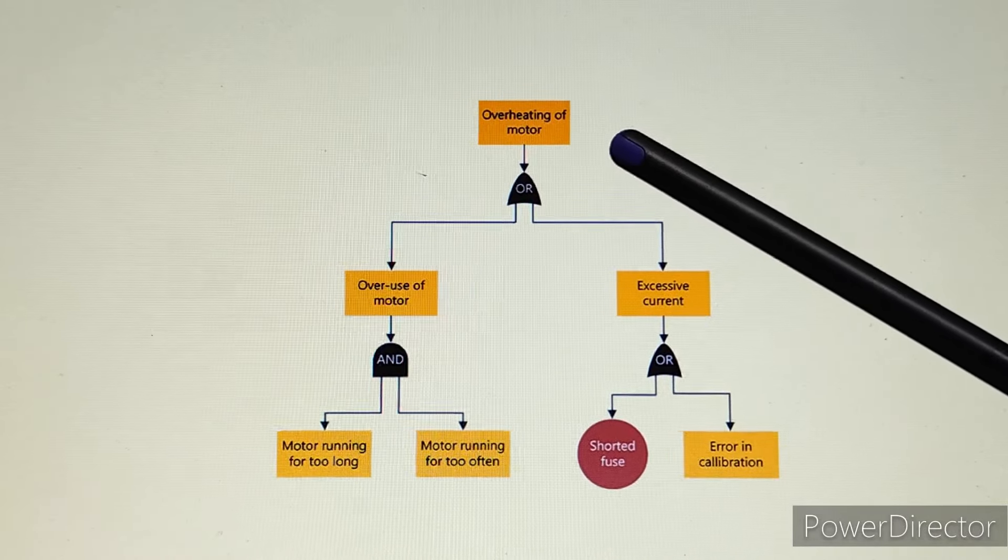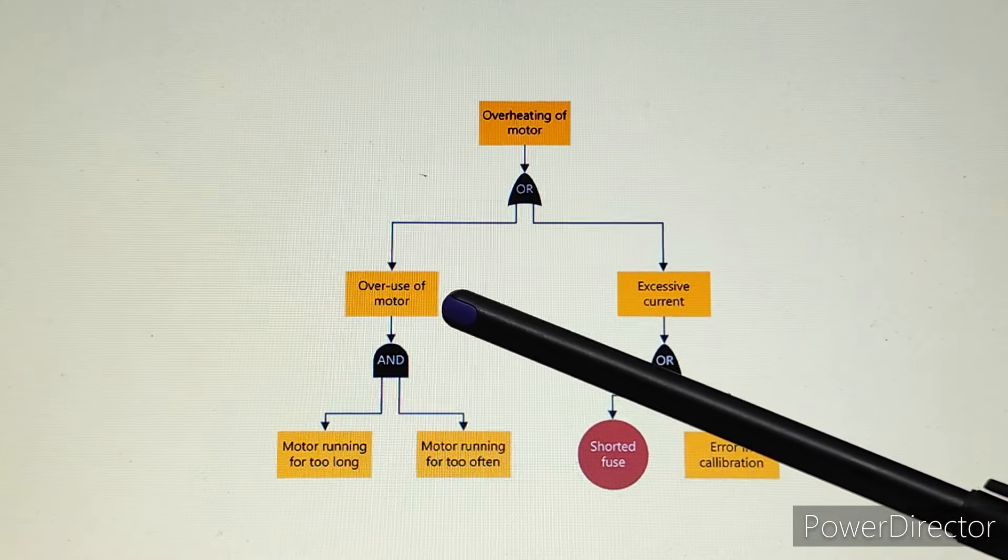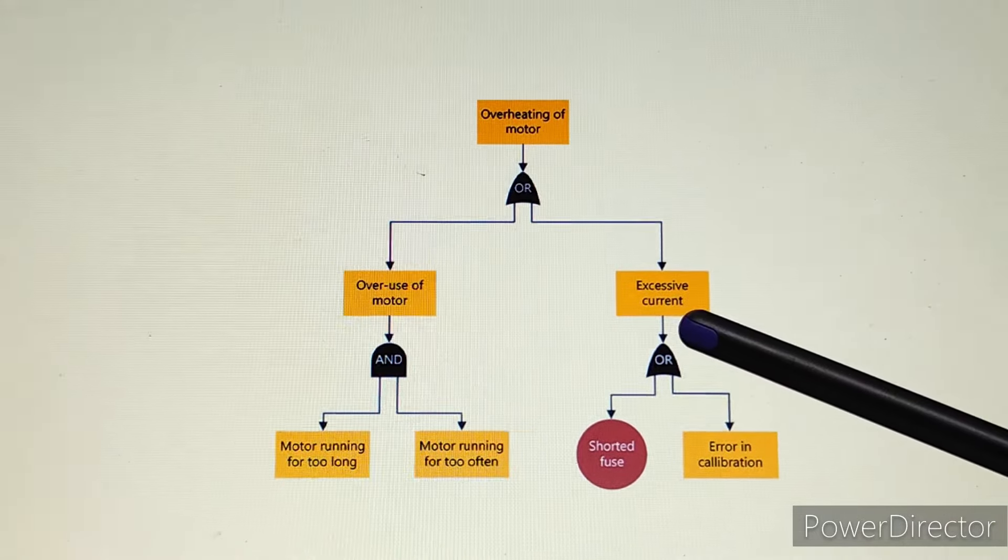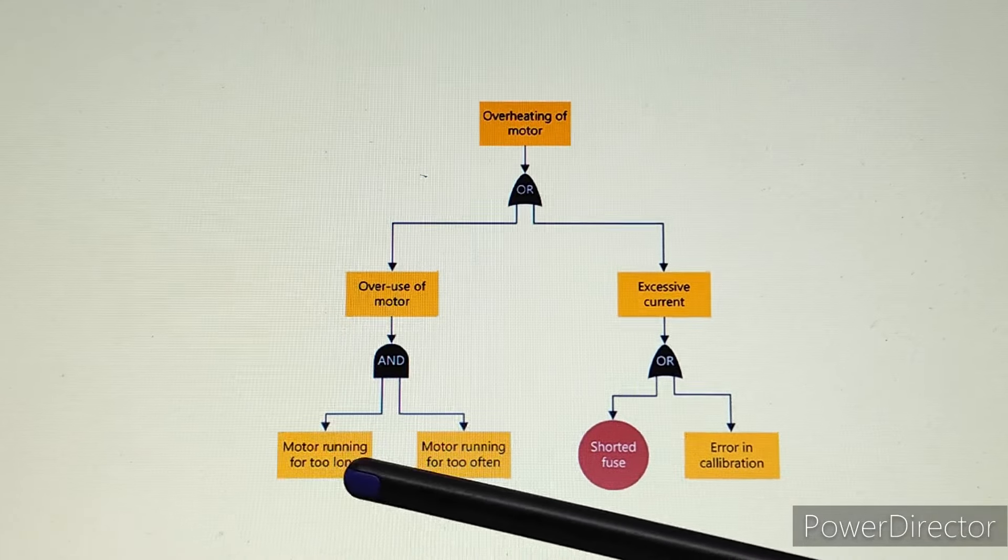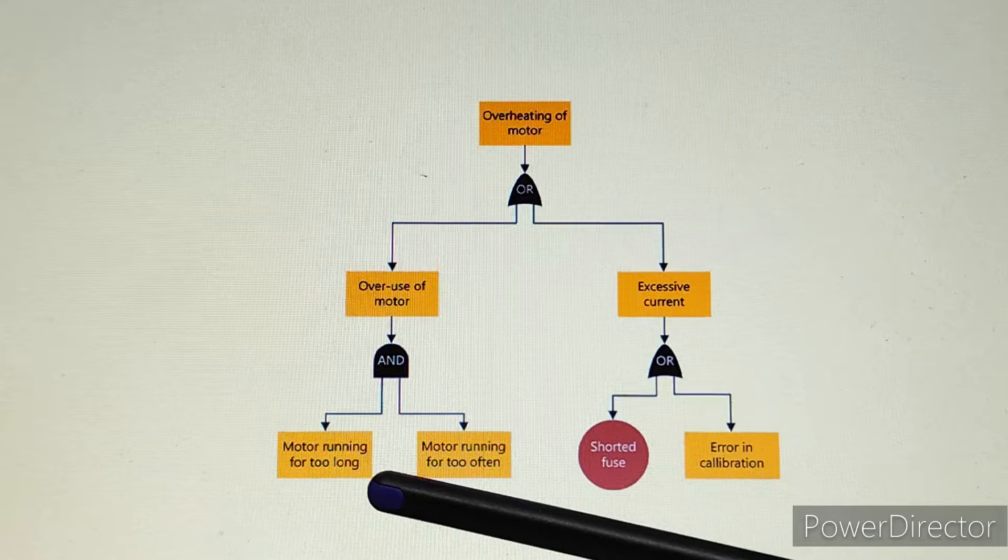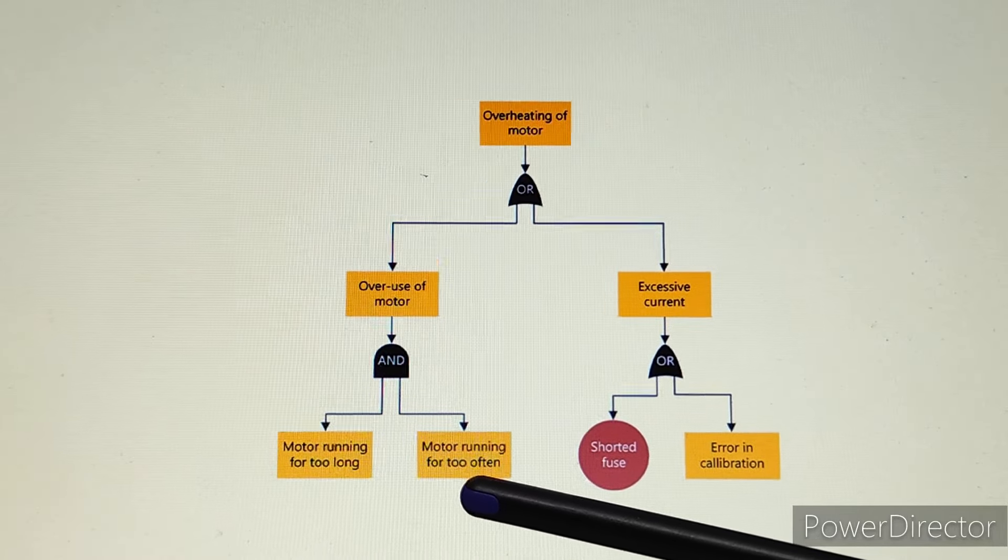We can solve this problem. Overheating of motor can happen either by overuse or excessive current. Overuse of motor has two reasons: motor running for too long or we use the motor too frequently.